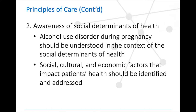One of the principles is being aware of the social determinants of health — viewing alcohol use disorder during pregnancy in the broader context of social determinants. This considers things like early childhood experiences, socioeconomic status, race, ethnicity, gender, and sexual orientation. It's really important to identify and address socioeconomic inequities that affect the patient's health, and to connect patients to resources that might meet those needs — for example, housing, access to food and nutrition, child care for additional children, and financial assistance.